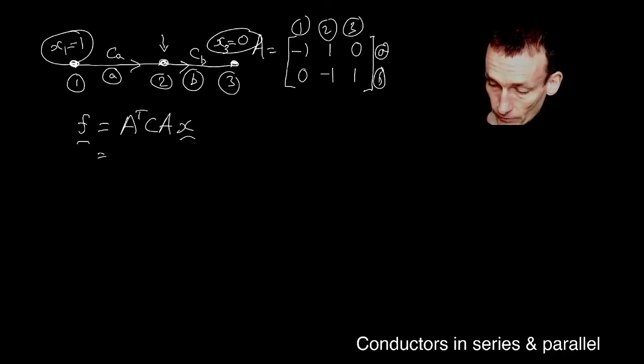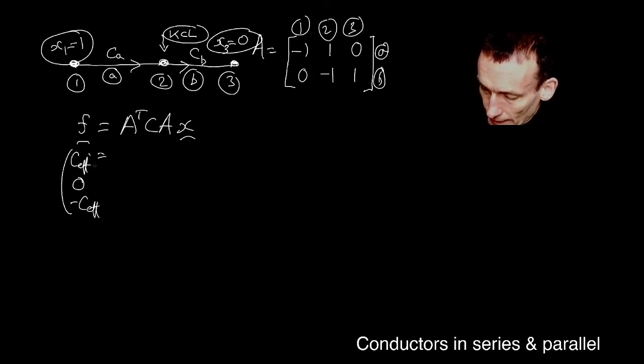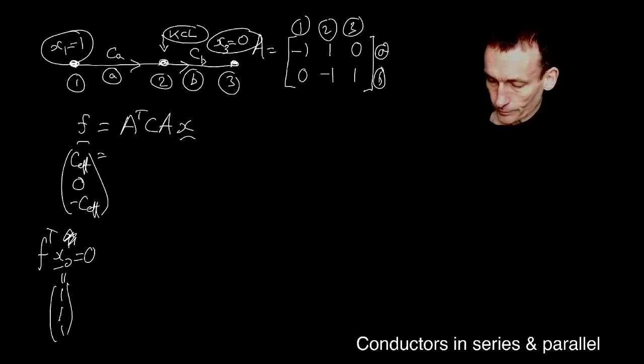F is going to be my CEF by definition. Kirchhoff current law tells me that there's no net current out of node two. And then node three must be minus CEF. Again, for the reason that we need F transpose X naught to be zero. Where now X naught is one, one, one.